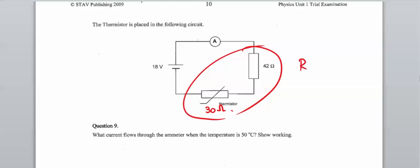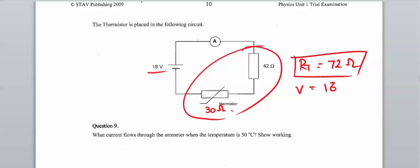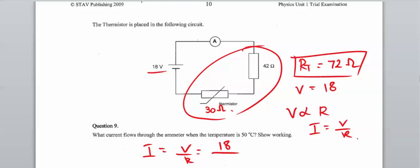At 50 degrees Celsius we have a total resistance of 72 ohms — that's 30 ohms from the thermistor plus 42 ohms from the fixed resistor. The voltage supplied by the circuit is always 18 volts. Since voltage is constant, the only thing changing is the current. Using I equals V over R, the current is 18 divided by 72, which gives 0.25 amps.